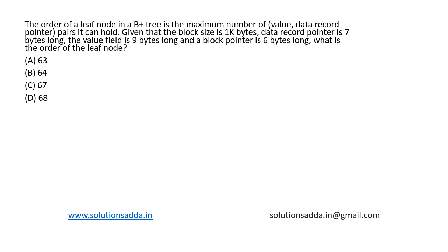So the given data here is disk block is 1024 bytes, data record pointer denoted by R is 7 bytes, and the value size V is equal to 9 bytes.